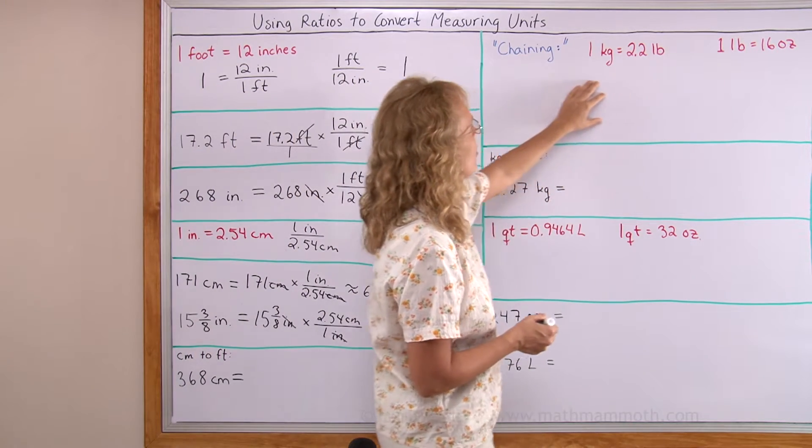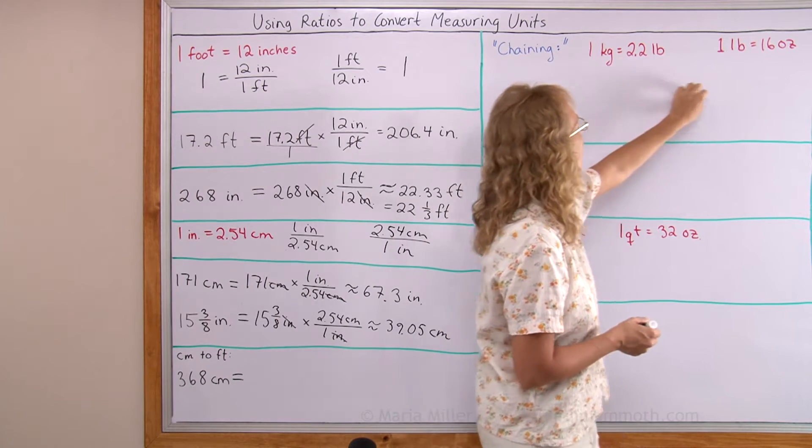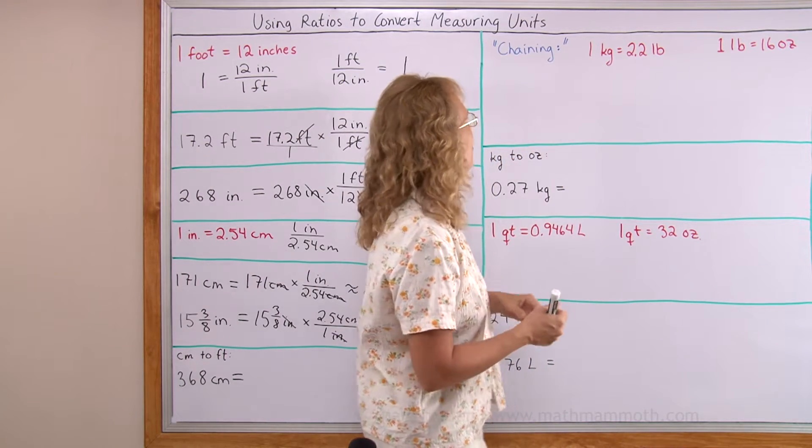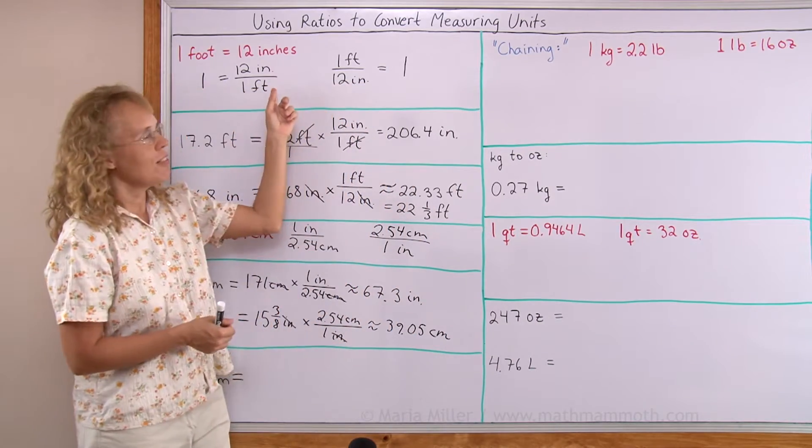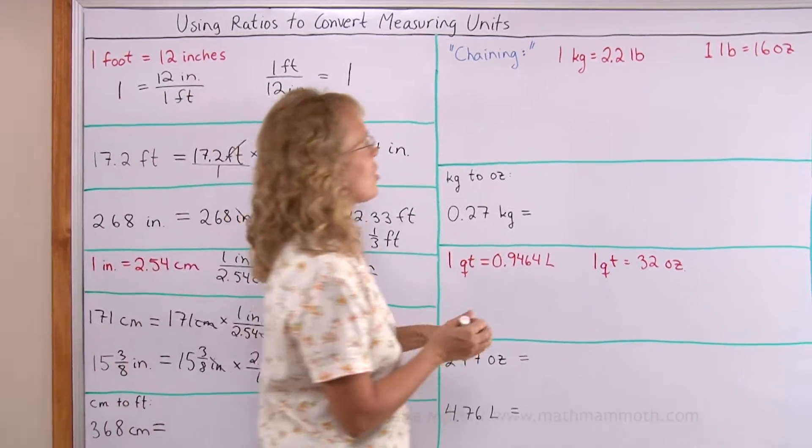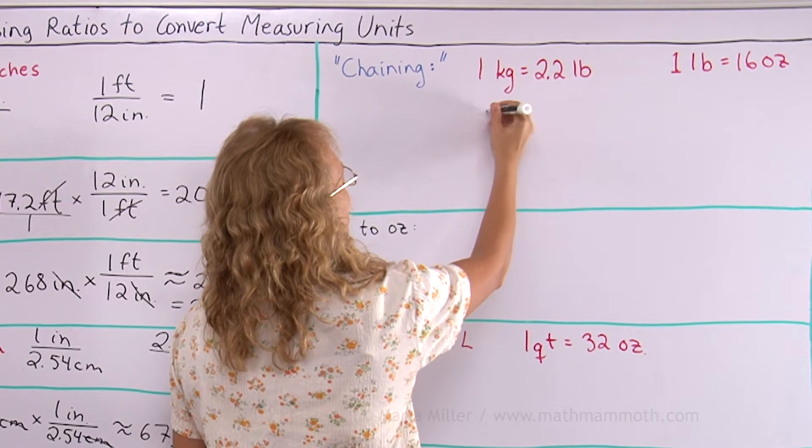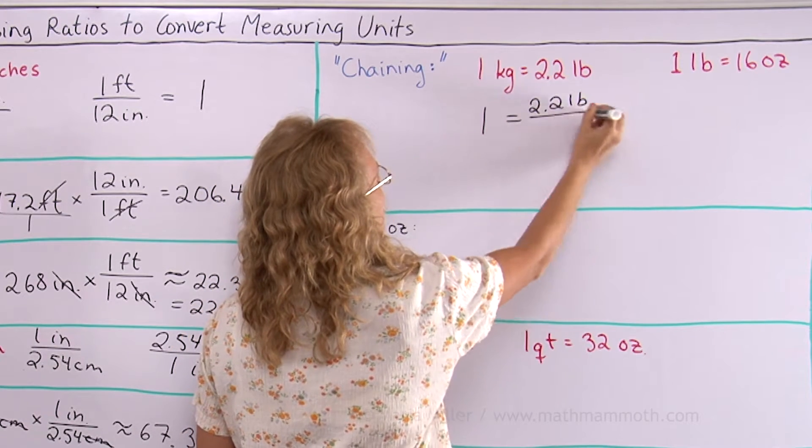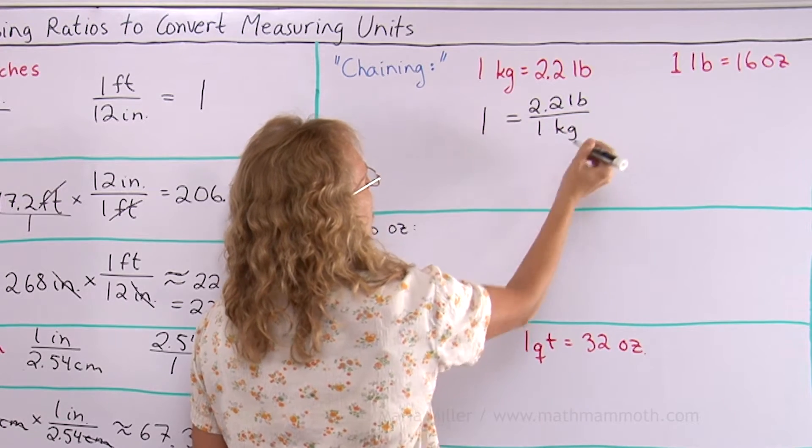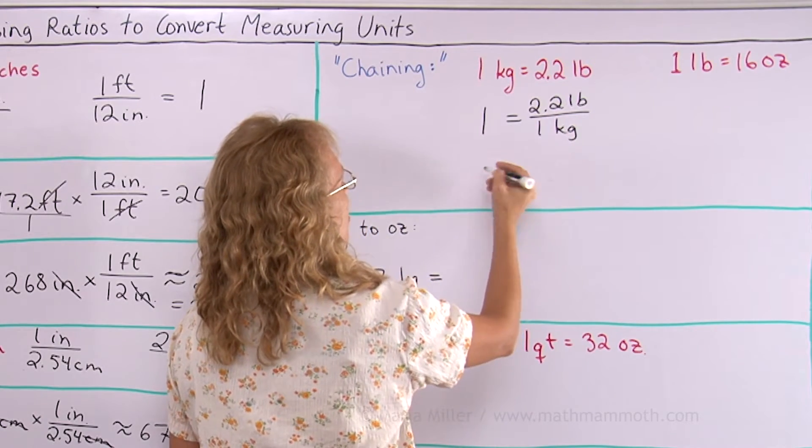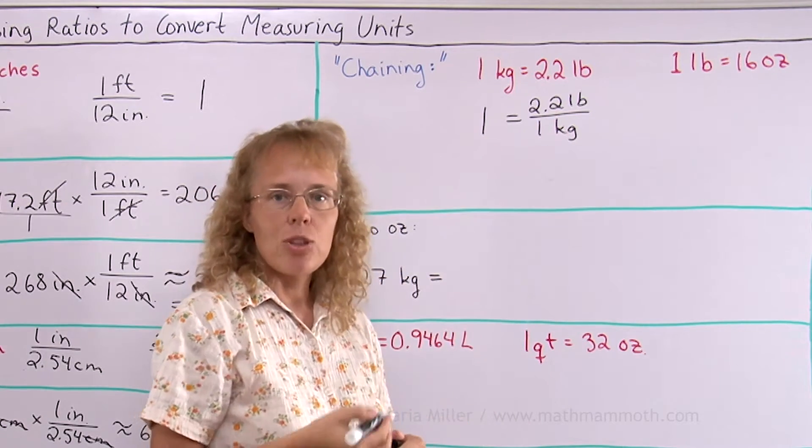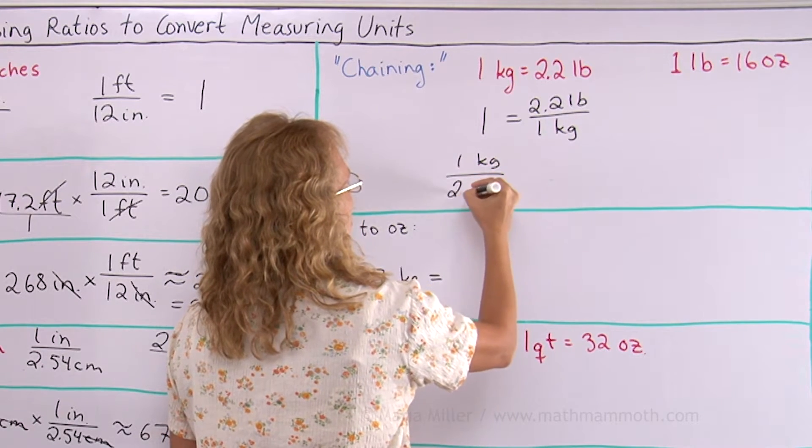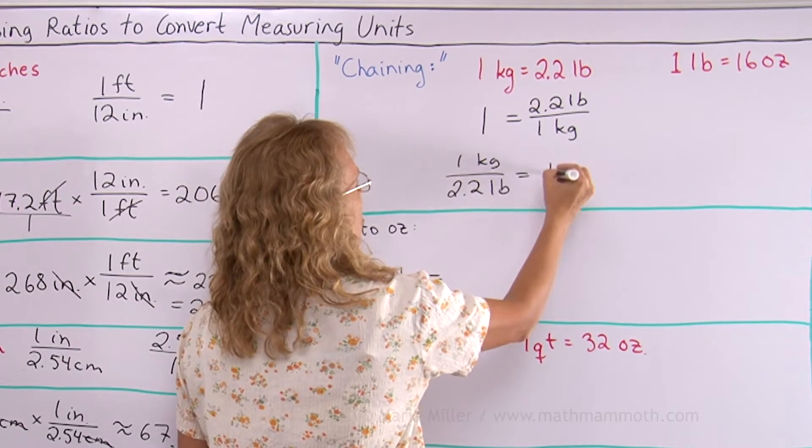First of all I will write my ratios for these two conversion factors. 1 kilogram equals 2.2 pounds. We do the same as I did here. If I divide both sides of that equation, I get the ratio 1 equals 2.2 pounds over 1 kilogram. Or I could get just the opposite way around. If I divide by 2.2 pounds, then I get that 1 kilogram over 2.2 pounds equals 1.